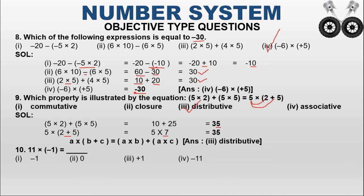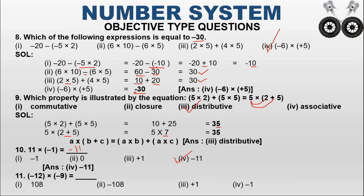Question 10 has two parts. First: 11 into minus 1 equals 2. The two integers have different signs, so the result is negative. 1 into 11 equals 11, so the answer is minus 11. The correct option is 4. Second: minus 12 into minus 9. Both integers have the same sign (negative), so the result is positive. 12 into 9 equals 108, giving plus 108. The correct option is 1.